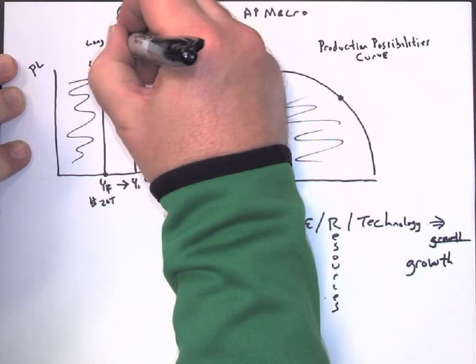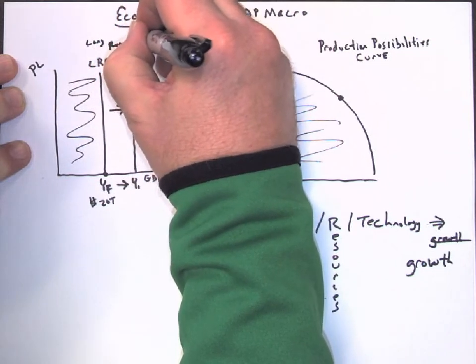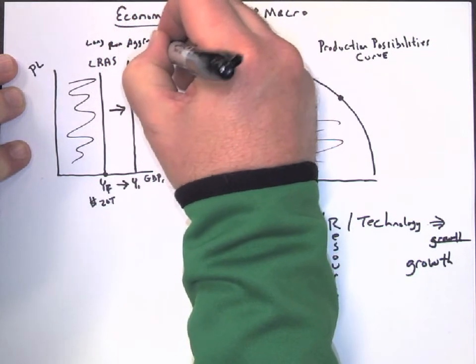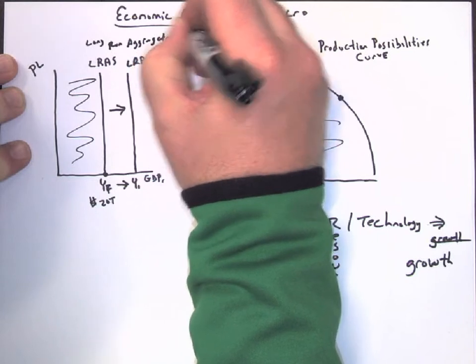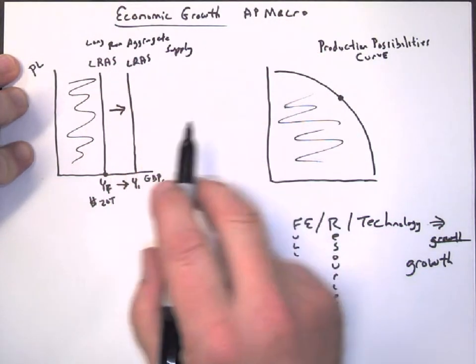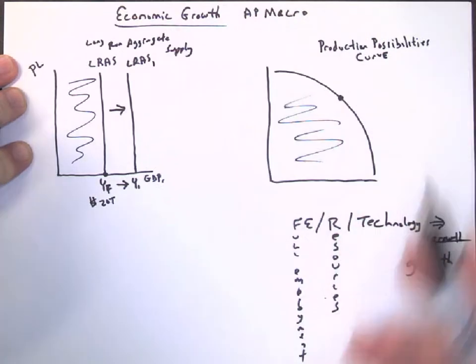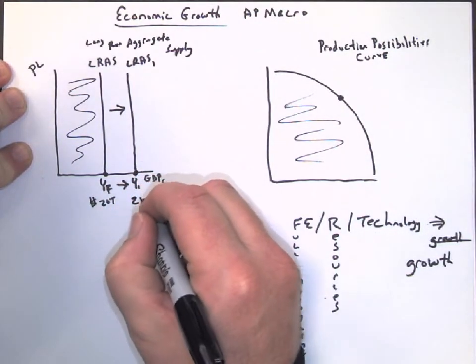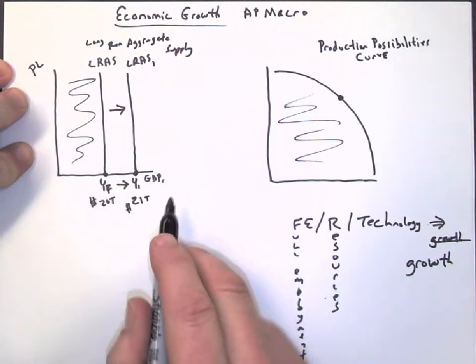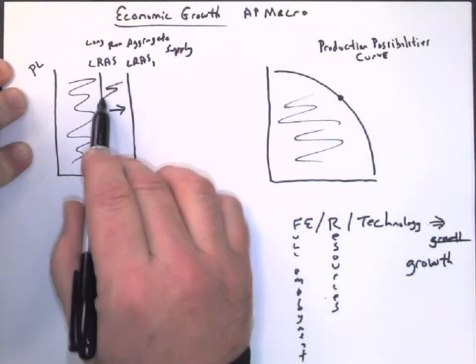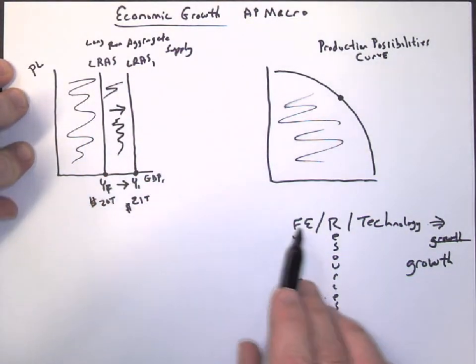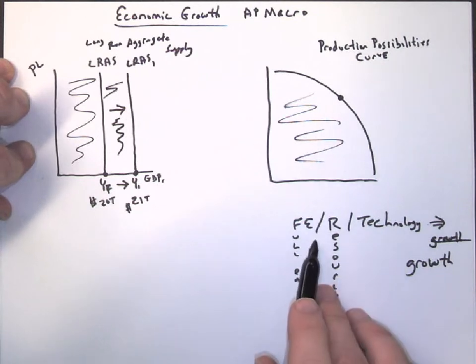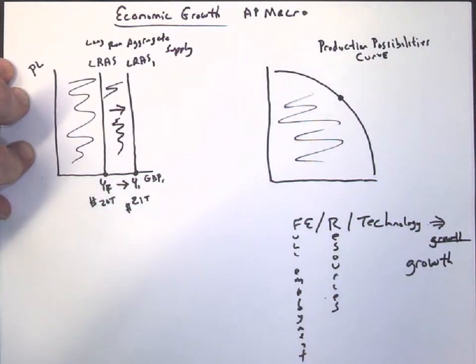Long-run aggregate supply. So our long-run aggregate supply would actually shift, and then now we'll be at a point where we could possibly make $21 trillion in GDP. So this is all our new potential GDP. And if everyone's working, the resources, quality and quantity are good, and technology is good, then those are all things that could allow us to grow.